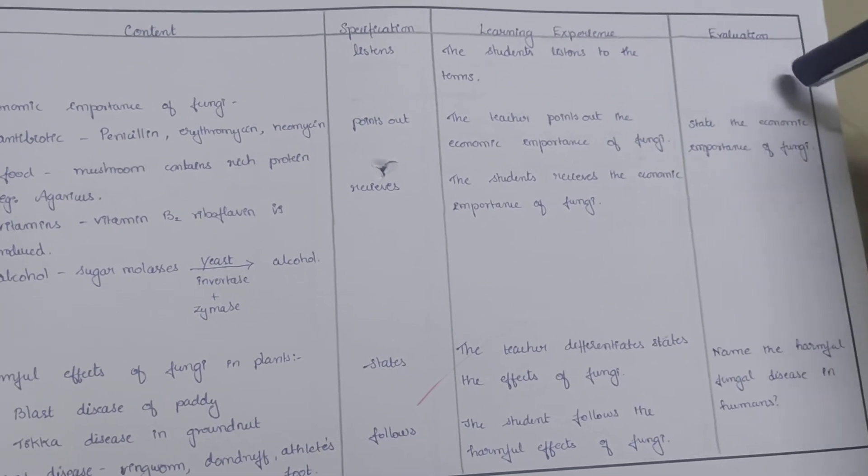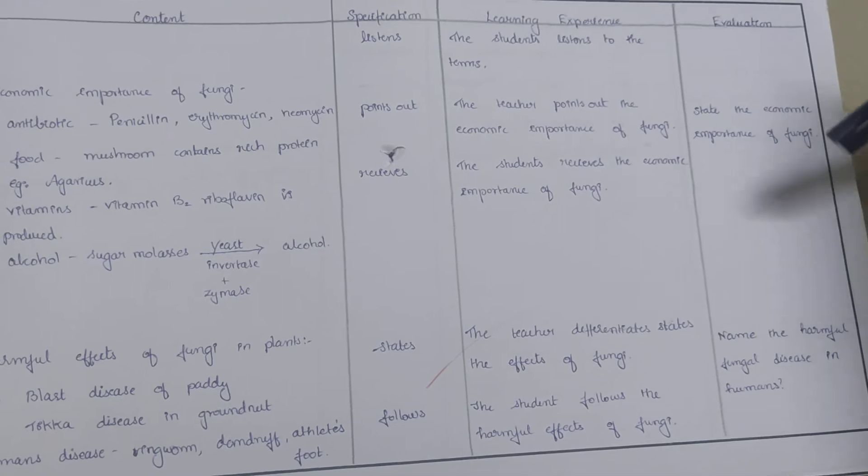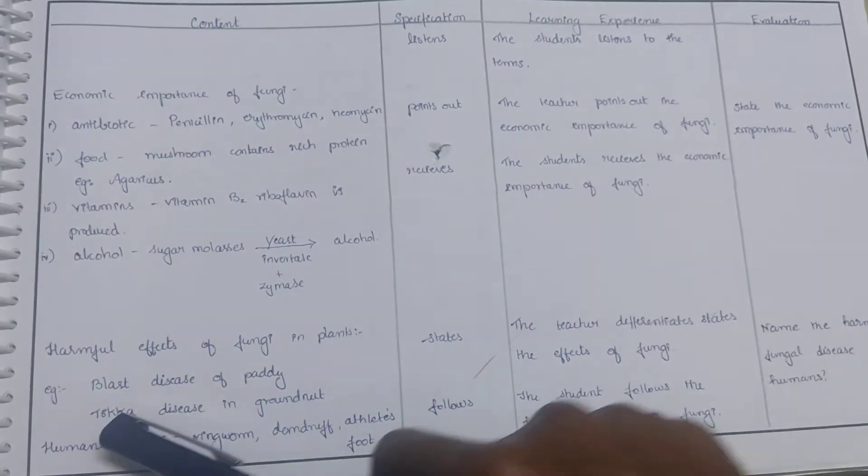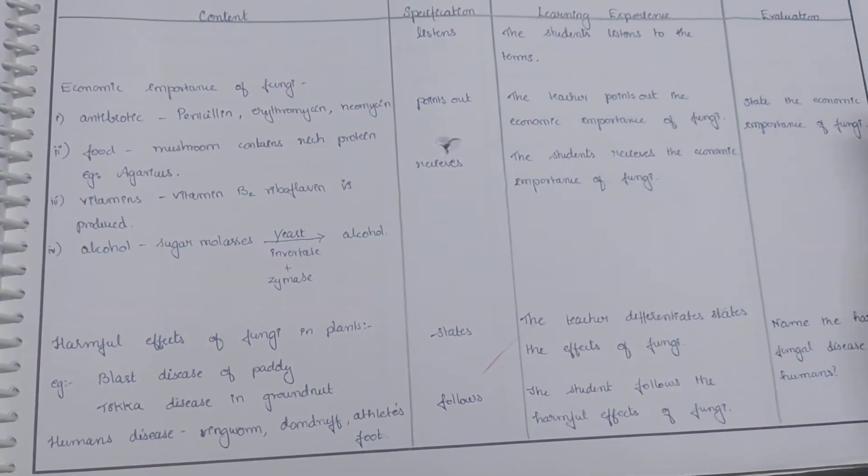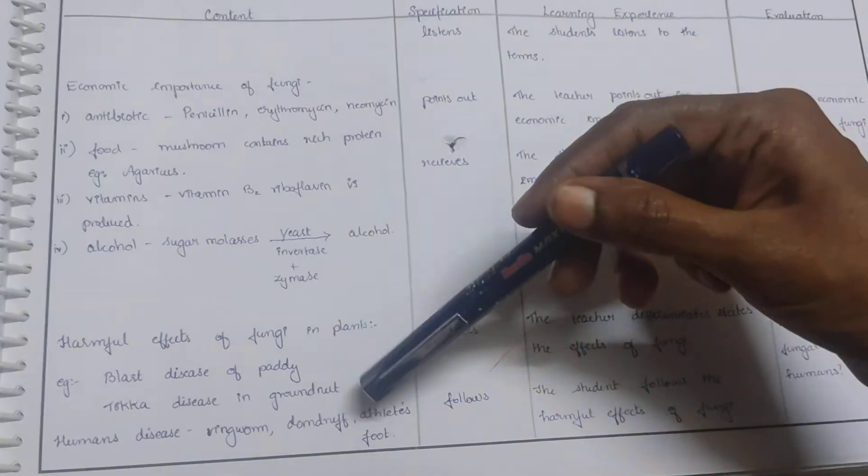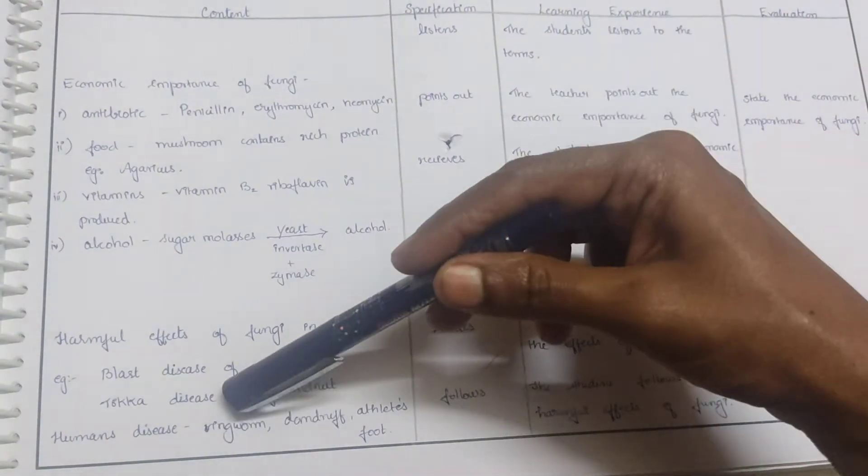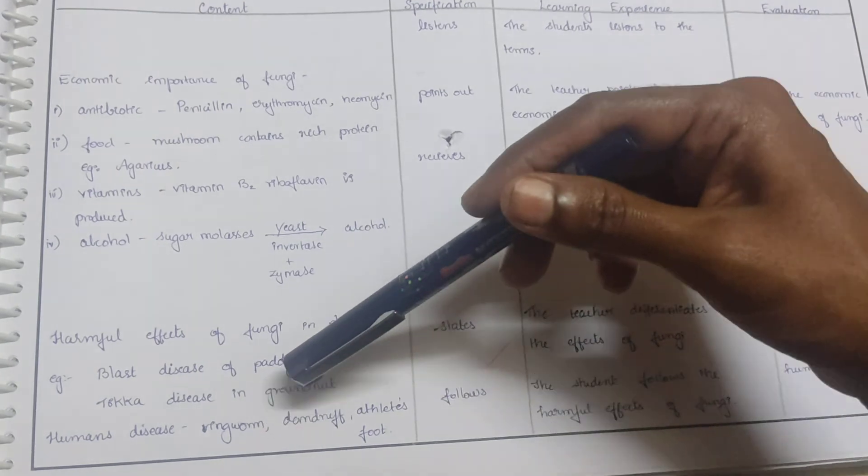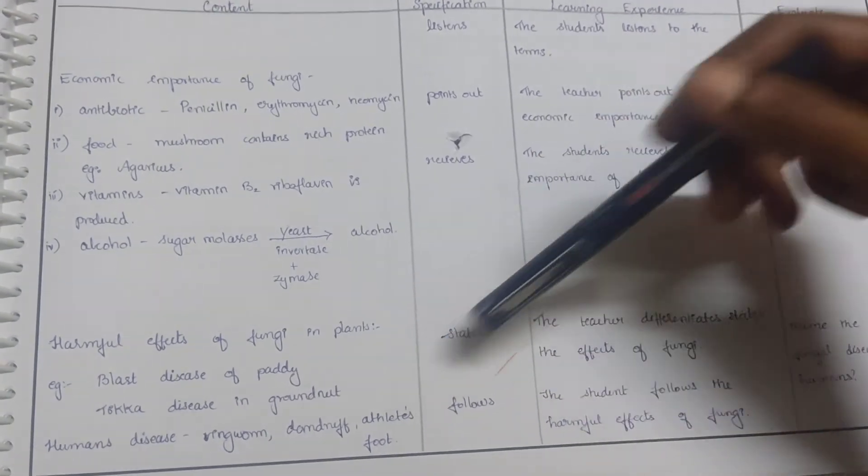Evaluation: state the economic importance of fungi. Harmful effects of fungi in plants: examples include blast disease of paddy and tikka disease in groundnut. In human diseases we can point out ringworm, dandruff, and athlete's foot.